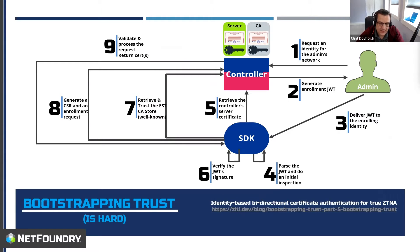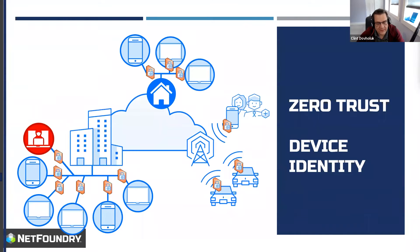Bootstrapping trust is very difficult. This is actually the flow the OpenZiti project follows — you can read all about it on a blog post with five parts on bootstrapping trust, definitely worth the read. If we give all our devices a strong identity and an attacker plugs their computer into the network and gets an IP address, the network is smart enough to know that attacker can't send data across the network. It can't access anything else because we're authorizing that endpoint before allowing a connection — that's called device identity.